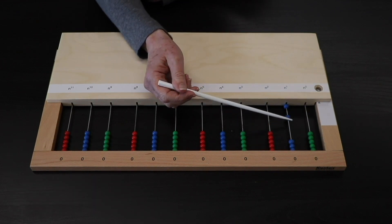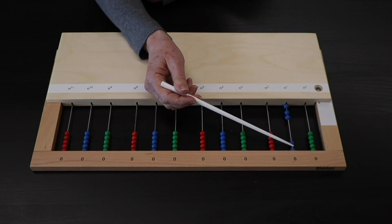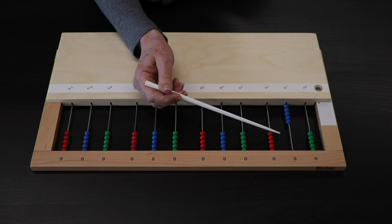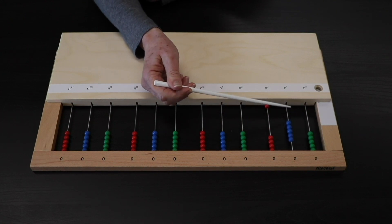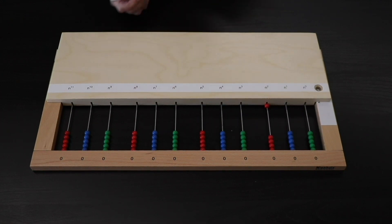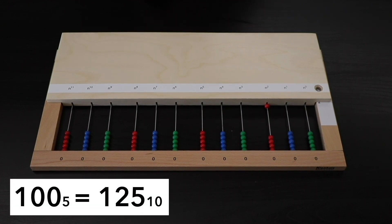So the child is allowed to count up to 5 and exchange to the next place value. This is 1, 0, 0, base 5.